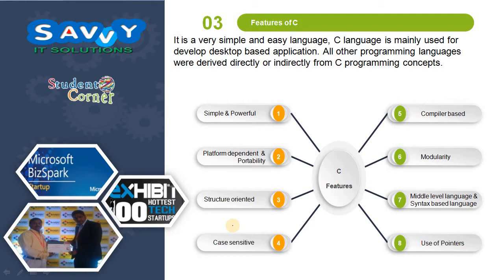C is a very simple and easy language, mainly used for developing desktop-based applications. All other programming languages were derived directly or indirectly from C programming. Now we are moving into the features of C language.